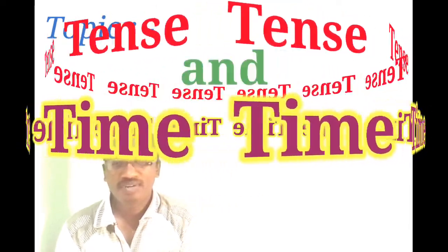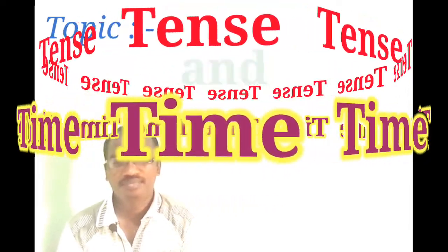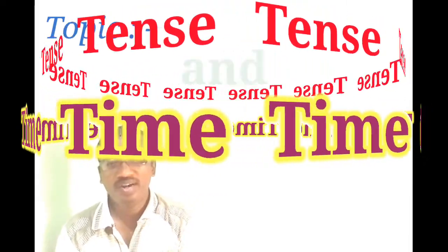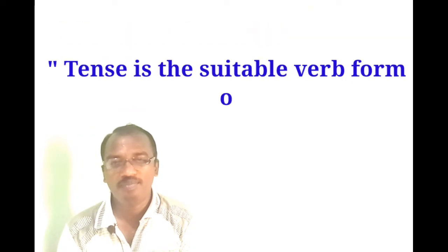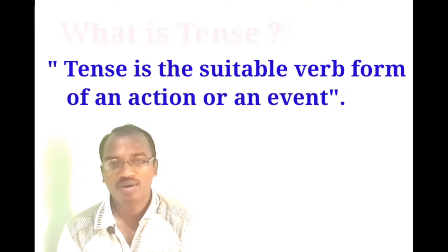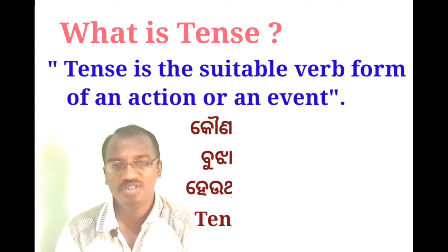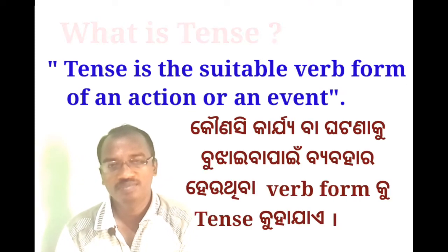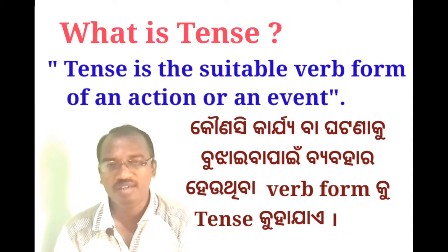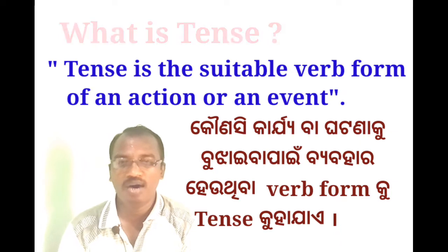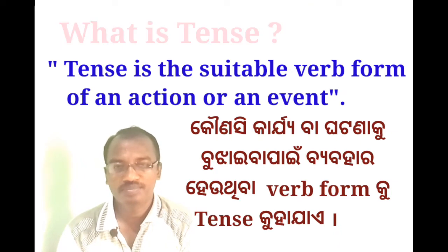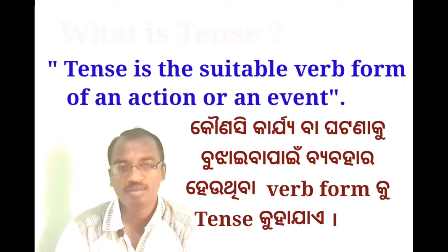Today's topic is Tense and Time. We will learn about tense. What is tense? According to English grammar definition, tense is the suitable verb form of an action or event. The verb form we use to express an action or event is called tense. The meaning of tense is 'kaal' (time/era).